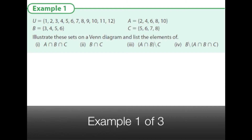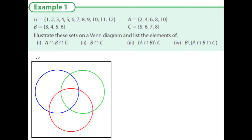Here are the first three examples. We're told what the universe is — sets A, B, and C. We draw a Venn diagram with three overlapping circles inside a rectangle, labeling the circles A, B, and C, and the rectangle U for universe. Now, what do they have in common? We see four is in A and B.